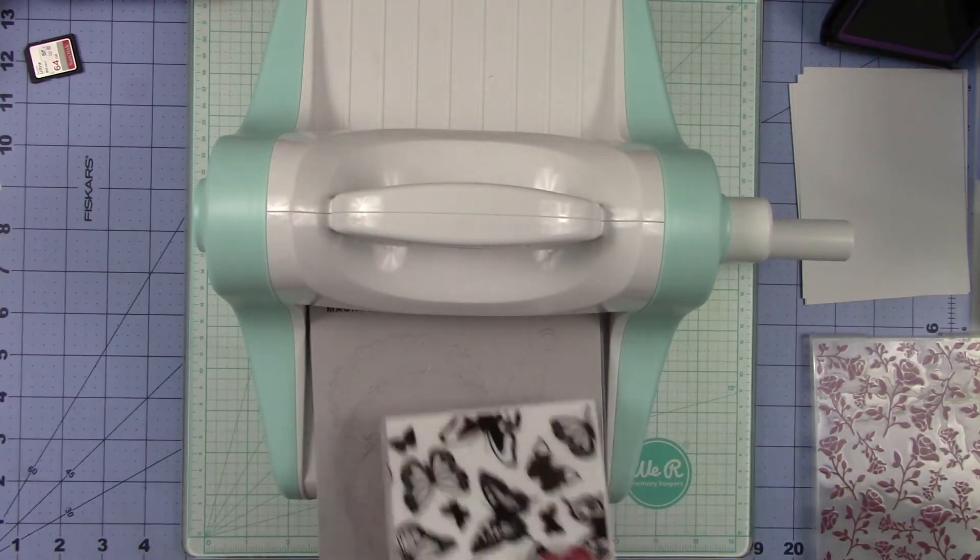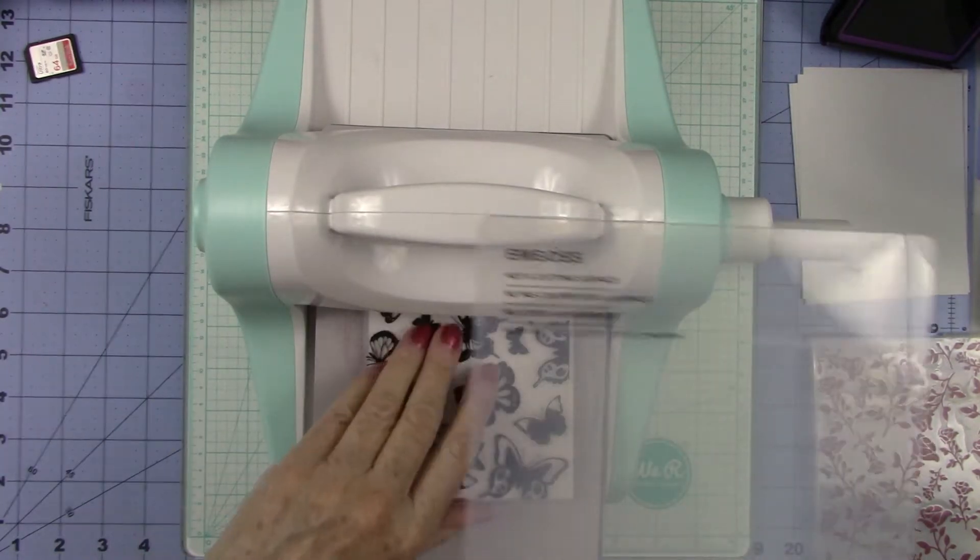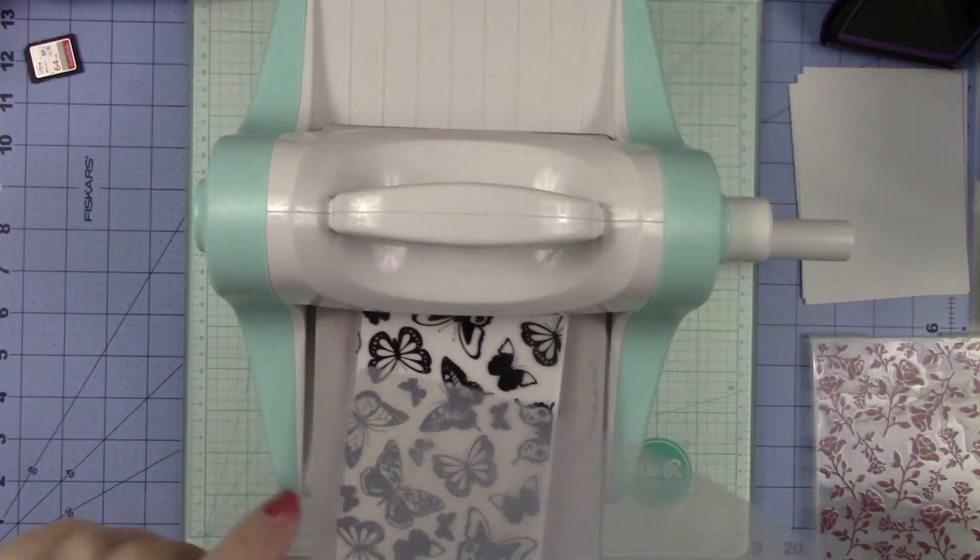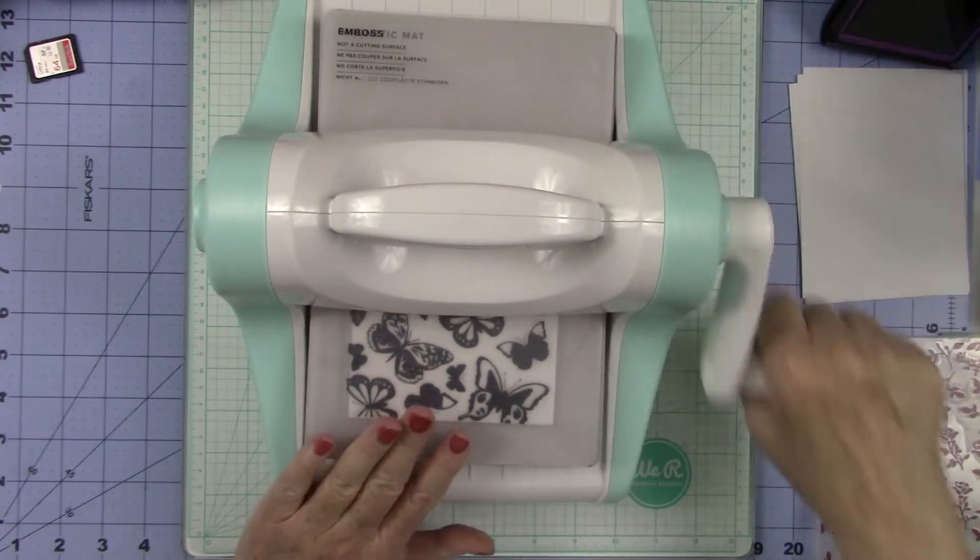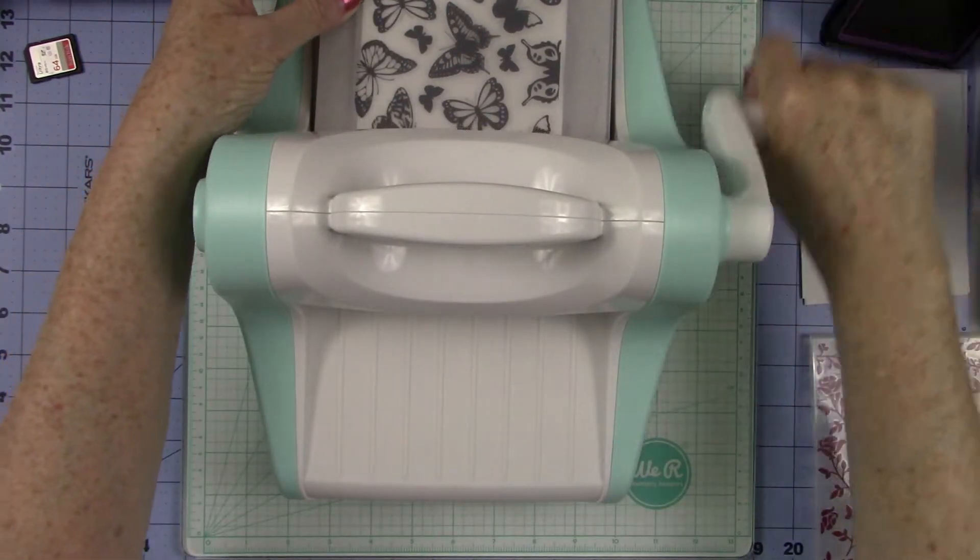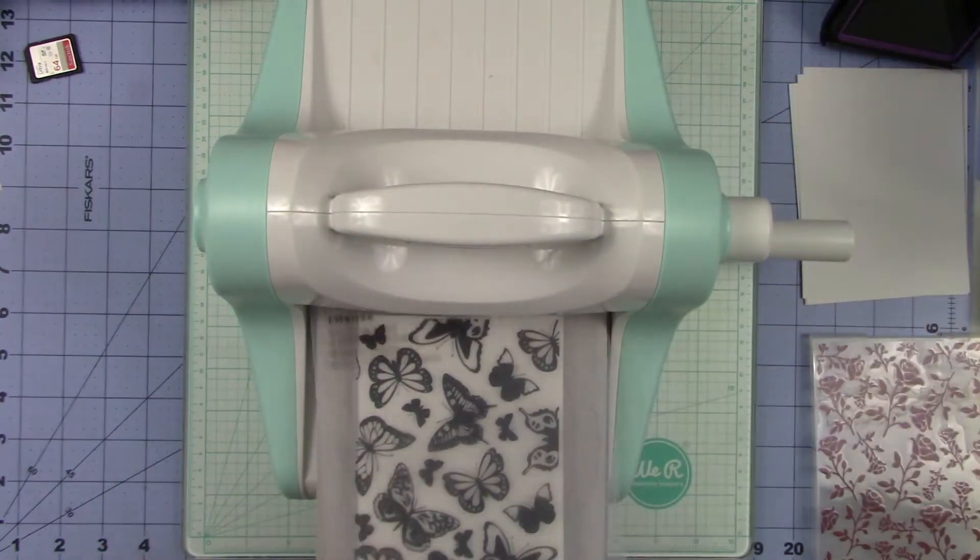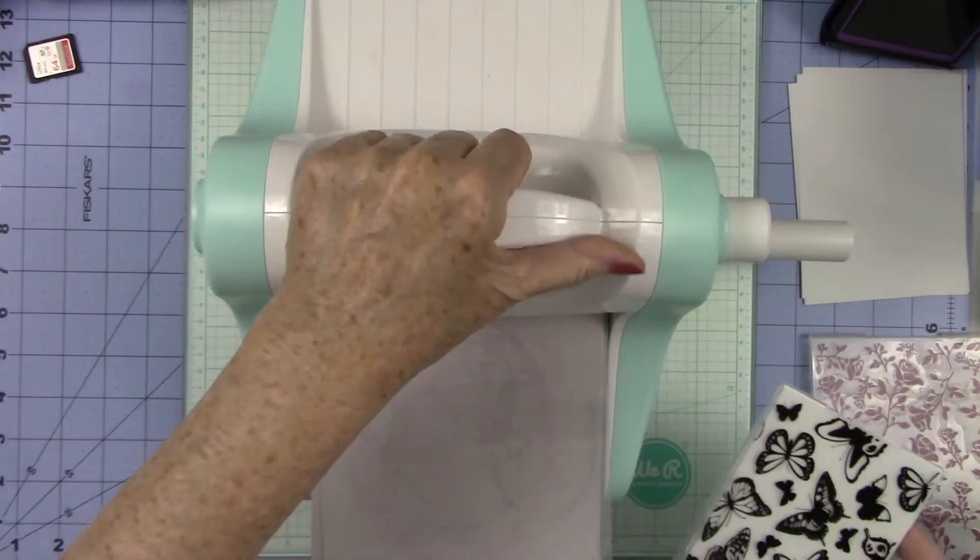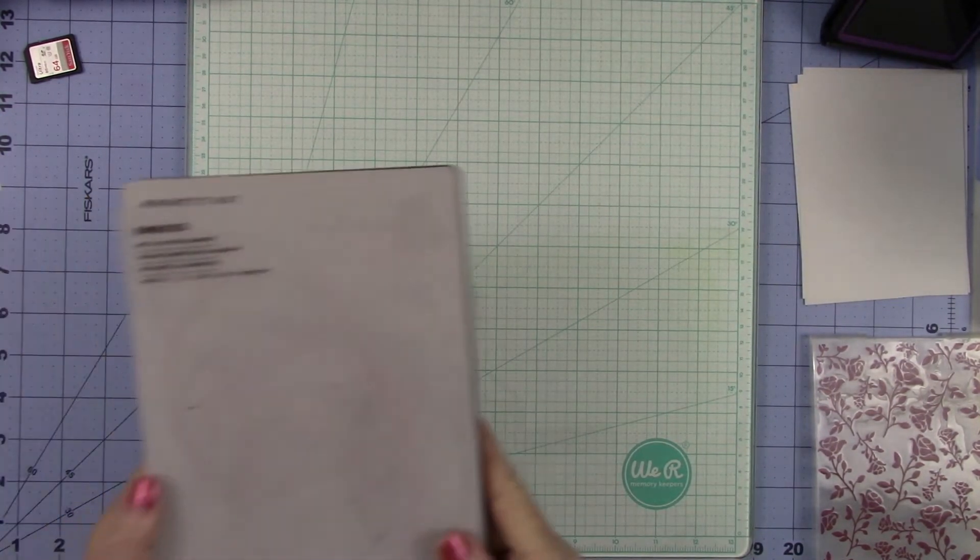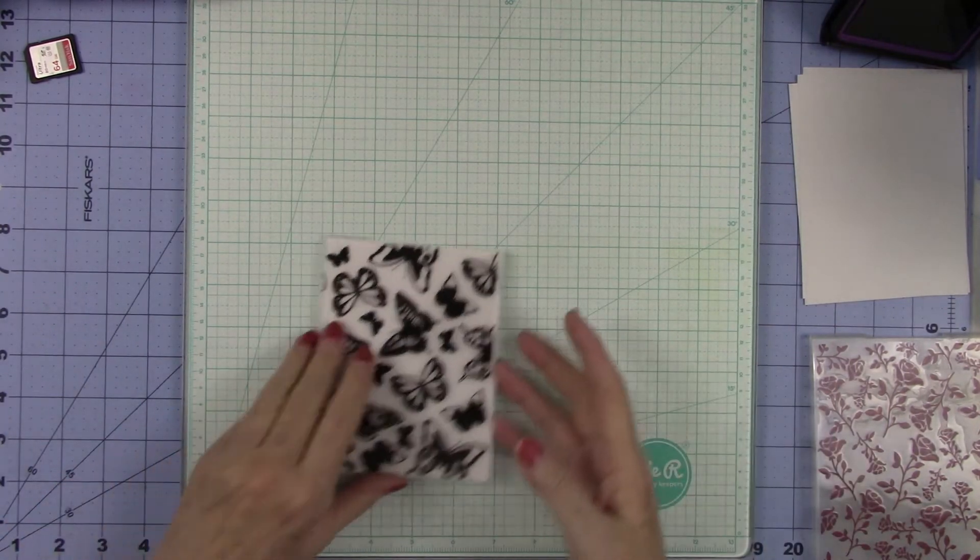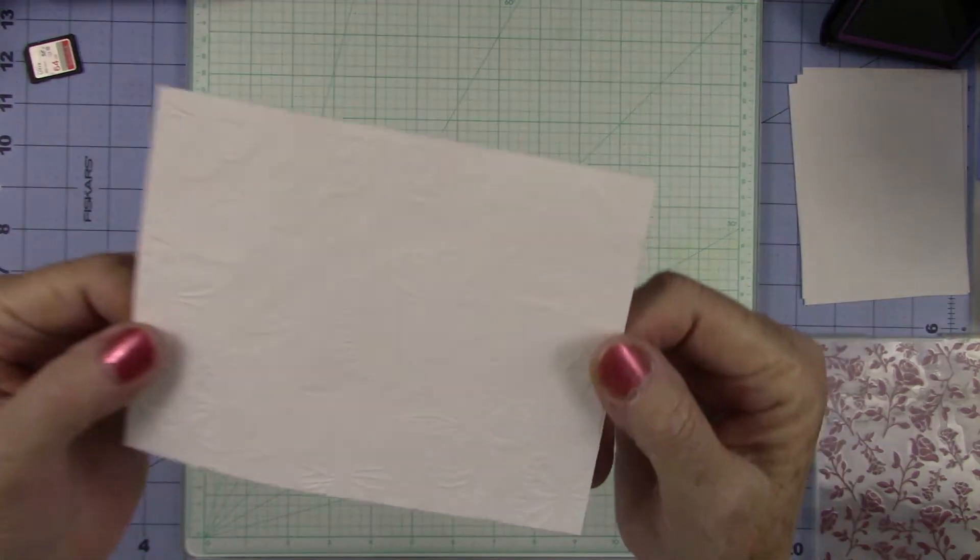I'm going to do the butterfly and I'm just going to show you without doing anything special, just putting your paper in like this, closing it up. I'm going to bring my Revolution over so you can see exactly what I'm doing. This is my base plate with my magnetic mat. I'm going to lay that down and I'm going to use my embossing plate. I'm going to lay that over top of my embossing folder and I'm just going to crank this through.